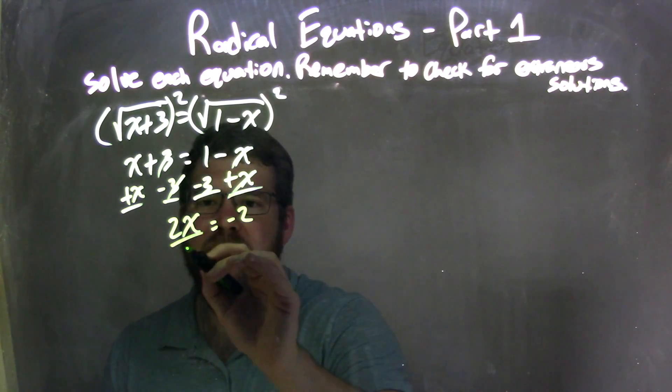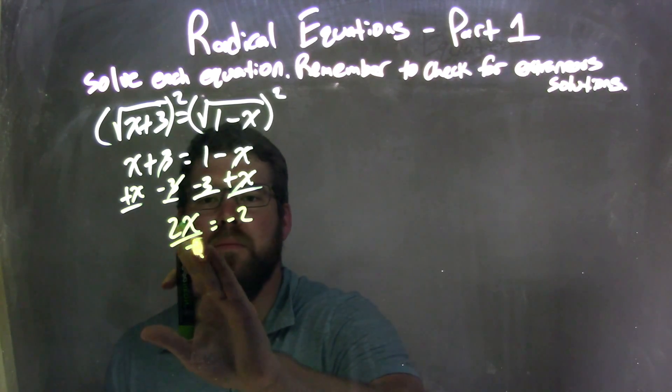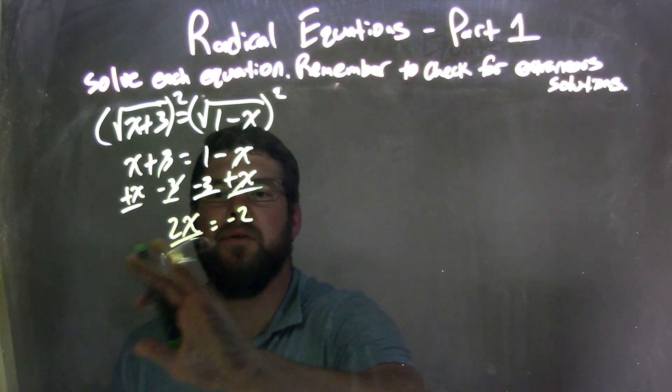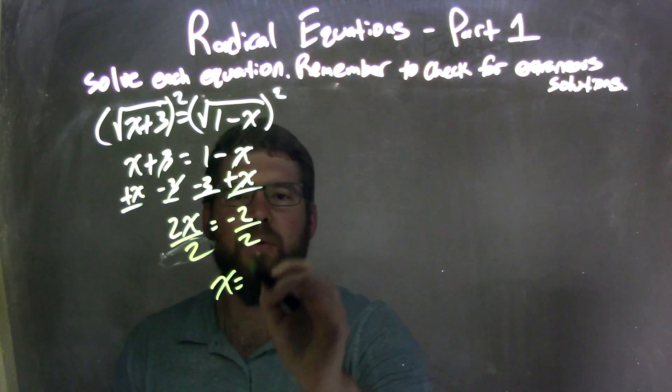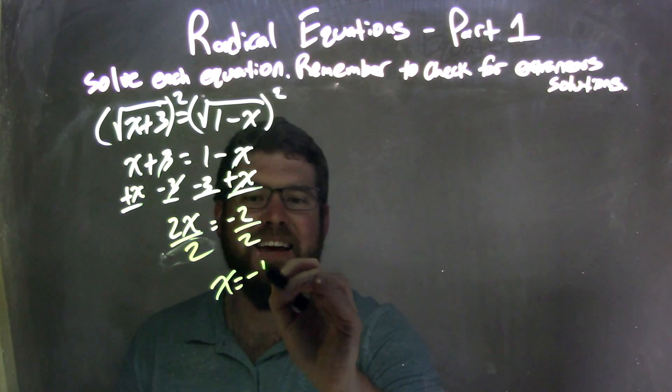Divide both sides by 2. So I'm left with x equals negative 2 divided by 2 is negative 1.